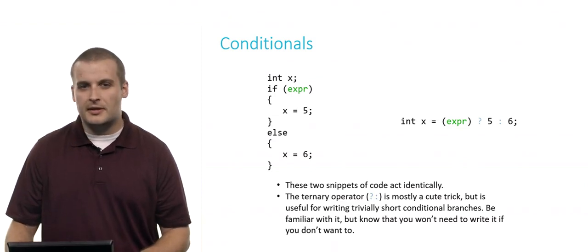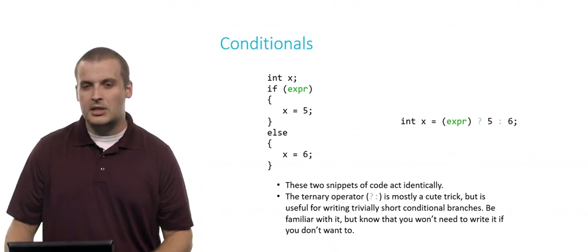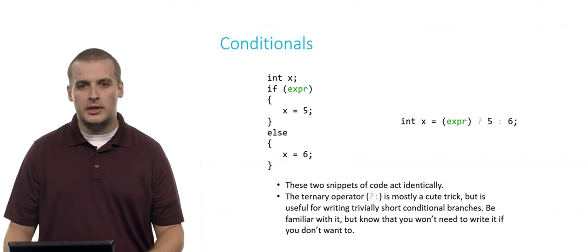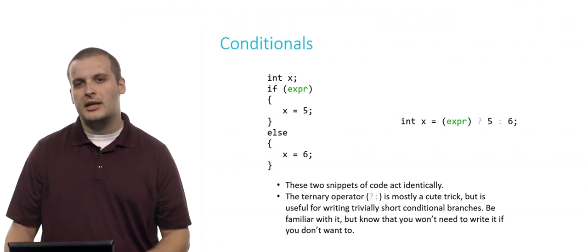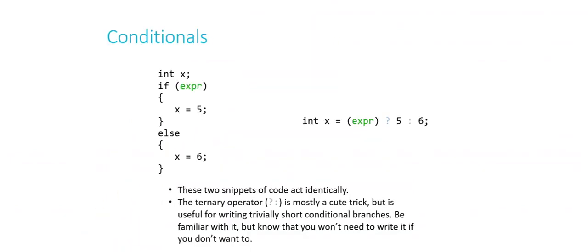Would you be surprised to know that the line on the right does the exact same thing? So this is called question mark colon, or sometimes called the ternary operator. And it's pretty cool. It's usually used as a cute trick. But what it allows you to do is to simulate an if else with really small, really trivially short conditional branches. You generally wouldn't use question mark colon if you had six lines of code between each set of curly braces. But if you're just making a quick decision, if you're going to do one thing or the other and it's very simple, this might be an example of how to do it with question mark colon, the ternary operator.